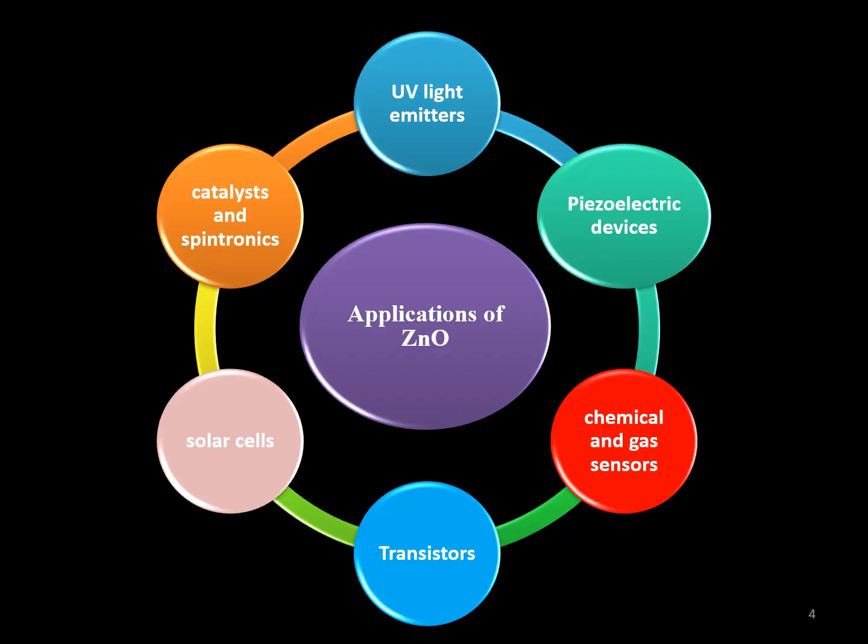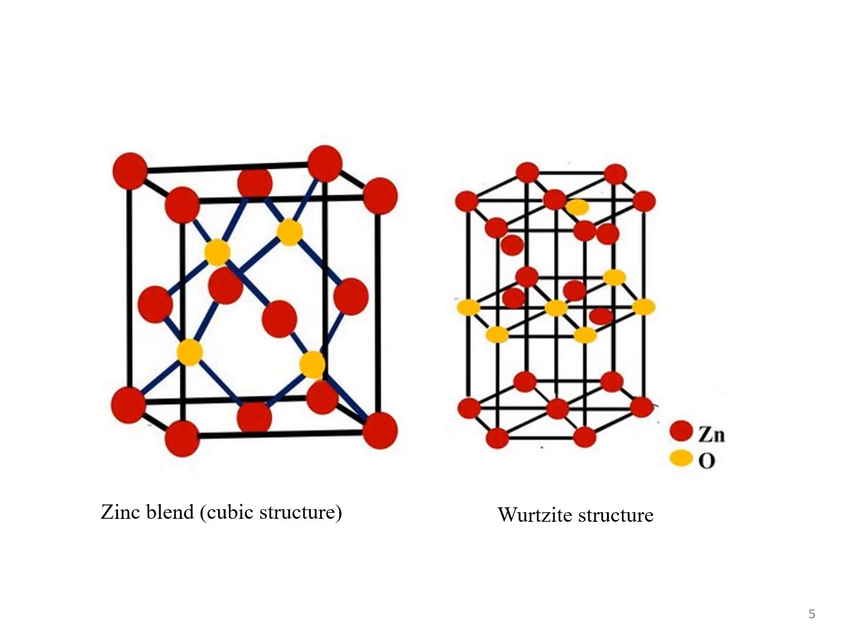ZnO is used in several applications such as UV light emitters, piezoelectric devices, chemical and gas sensors, transistors, solar cells, catalysts, and spintronics. ZnO forms in a cubic zinc blend or a hexagonal wurtzite structure.